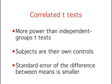The result is that the standard error of the difference between means is smaller in the correlated t-test, and since this term is in the denominator of the formula for t, this results in a larger t.